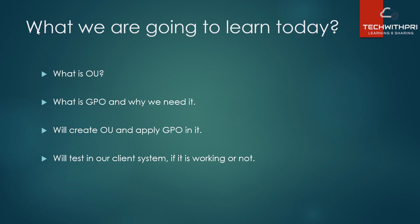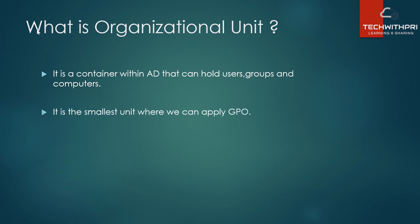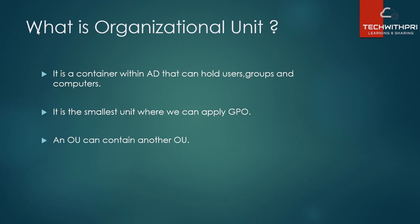What is an Organizational Unit or OU? Simply, it is a container within Active Directory that can hold users, groups, and computers. Unlike a group, an OU can also store other Organizational Units inside it. It is the smallest unit where we can apply a GPO — you can apply Group Policy directly to an OU.